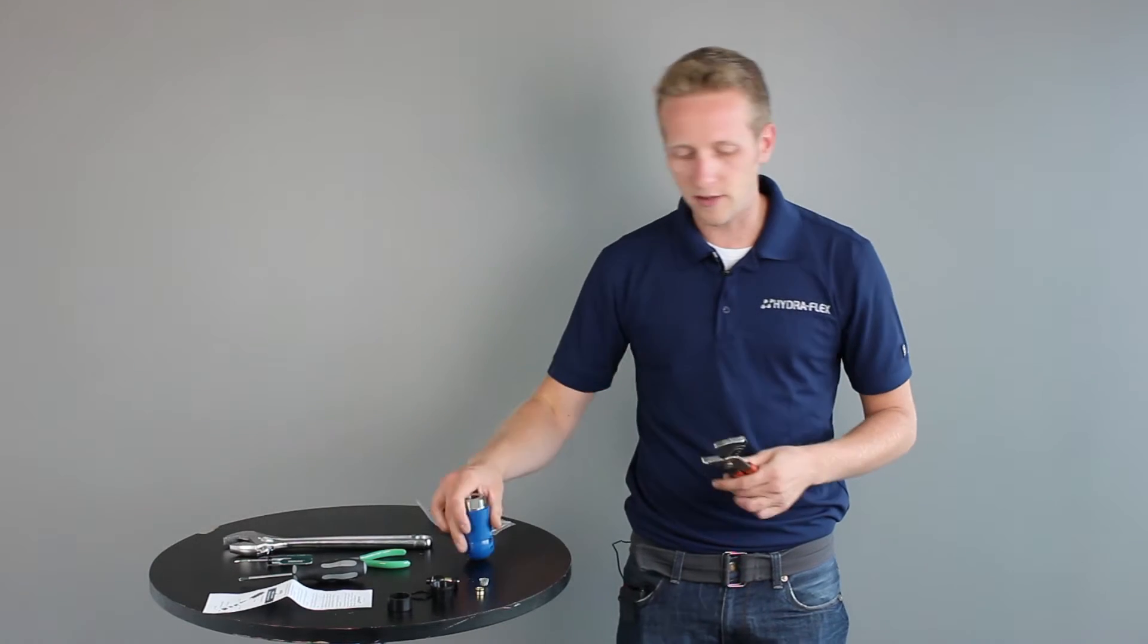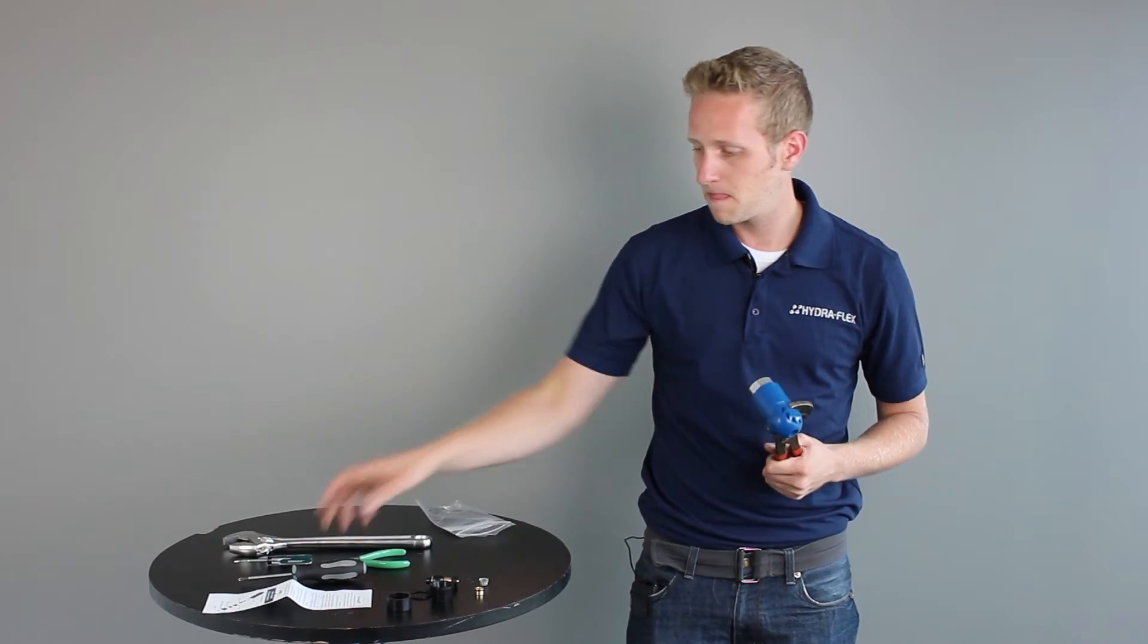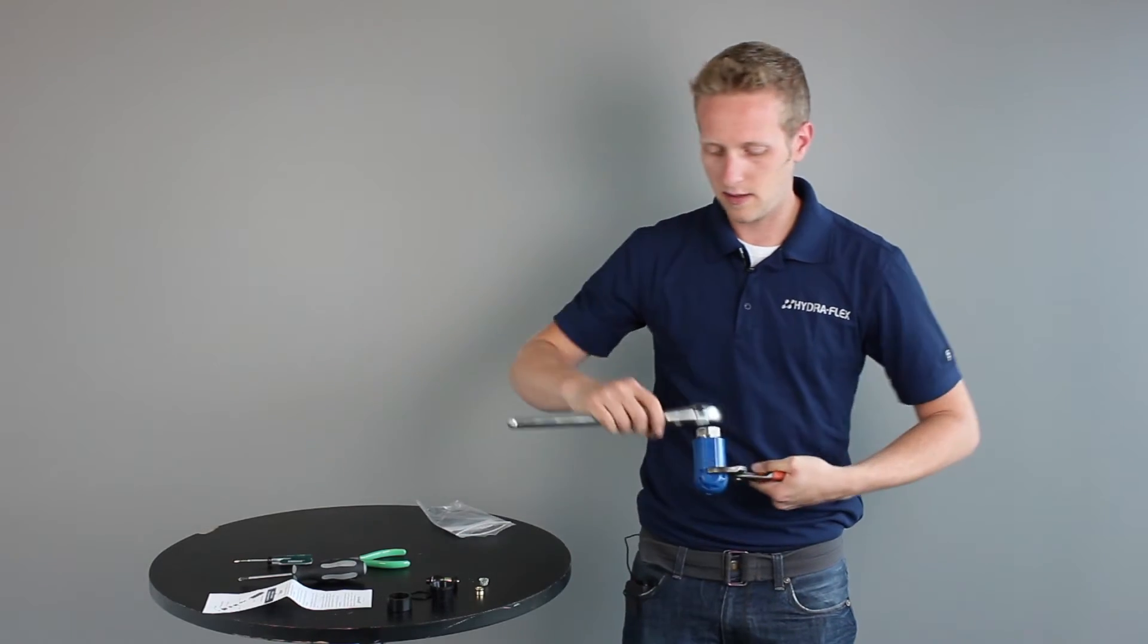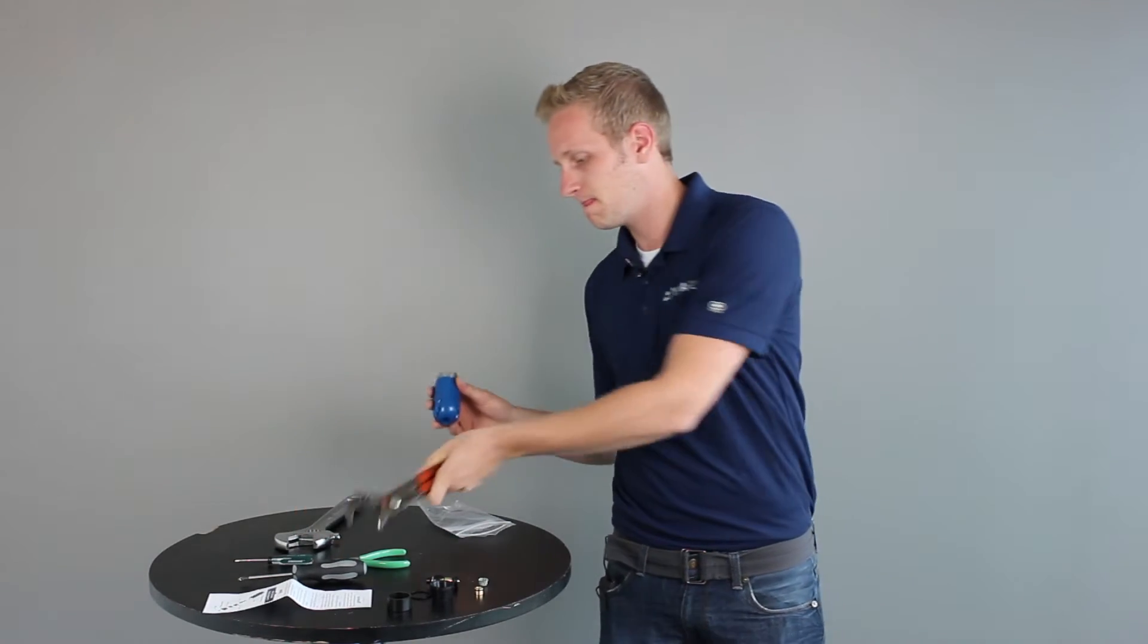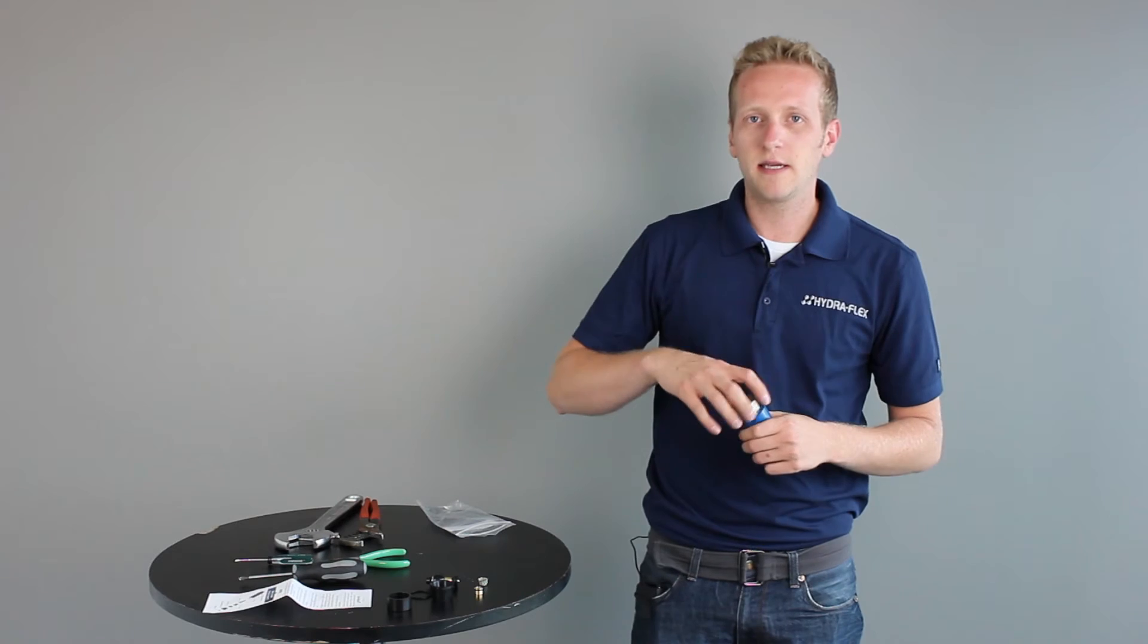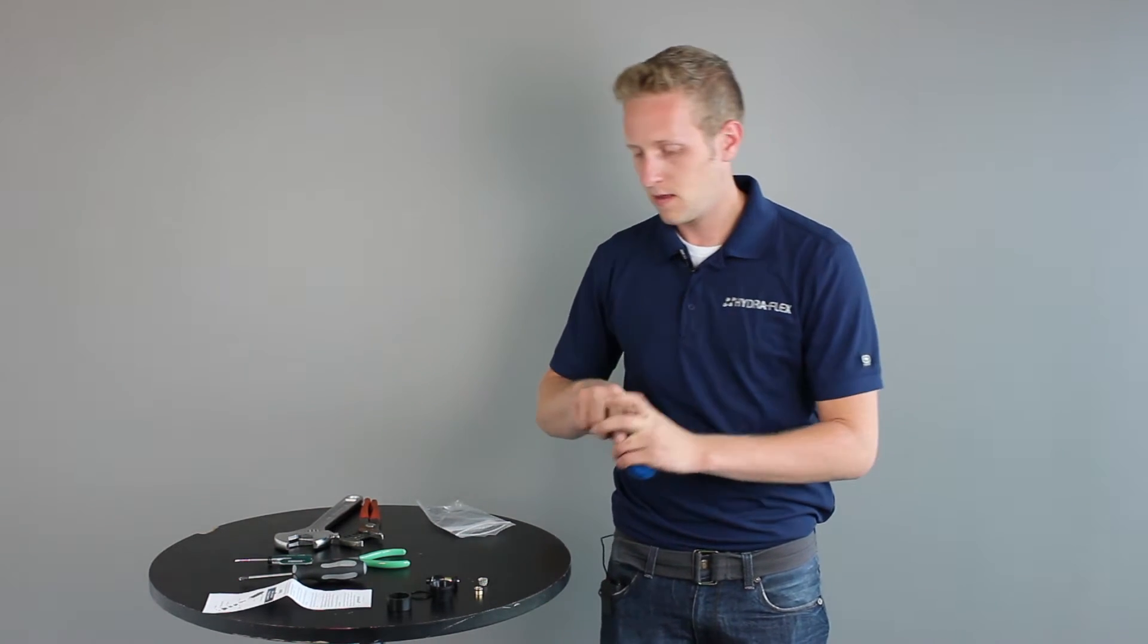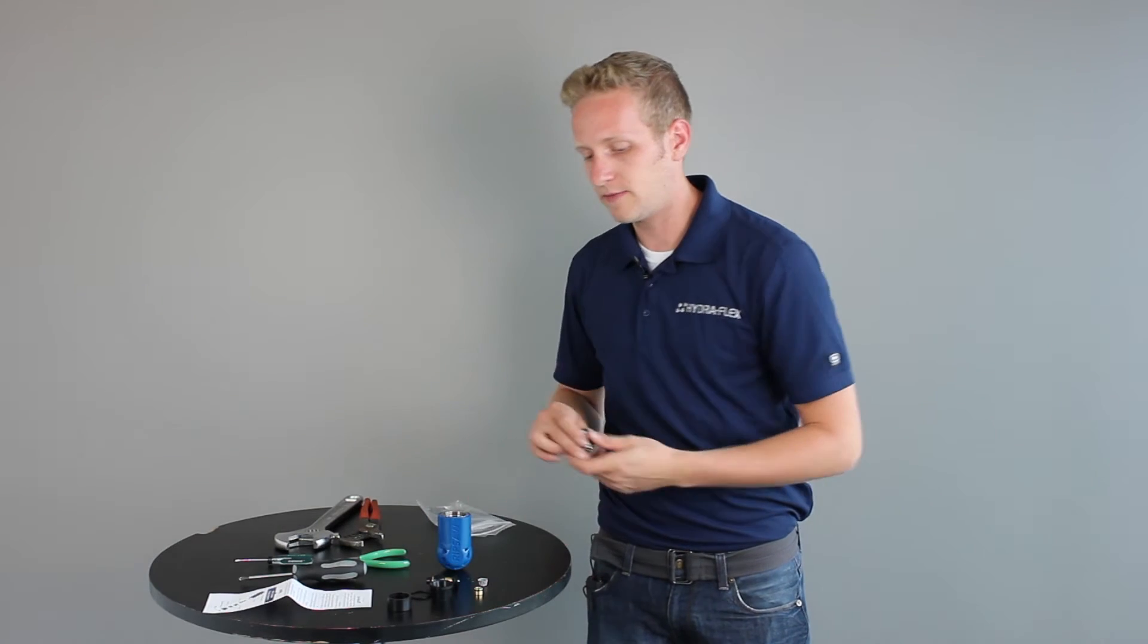Now we're ready to take apart our nozzle. We can do this by grabbing onto our channel locks and simply just unthreading the end cap. We can screw this off. We'll set the nozzle housing aside for right now.